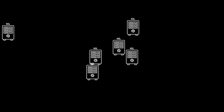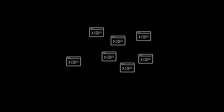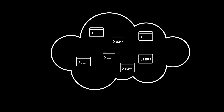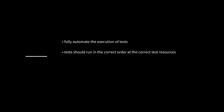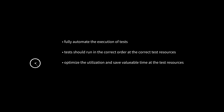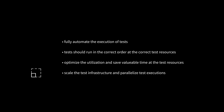Let's assume that we have multiple test resources. These can be real hardware-in-the-loop test benches or software-in-the-loop nodes, for example running in a cloud cluster. What we want now is to fully automate the execution of our tests, such that the tests run in the correct order at the correct test resources. With this, we could optimize our test resource utilization to save valuable time and get quicker results. We also want to have the flexibility to scale our test infrastructure and parallelize the test executions on different resources.